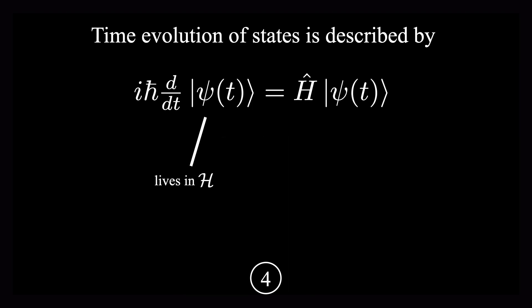Remember, this state is a vector that lives in the Hilbert space. The left-hand side of this equation tells us that its derivative, or rate of change over time, if you multiply it by this constant out in front, is equal to some operator H times itself. This operator is called the Hamiltonian operator, and it represents the total energy of the system.